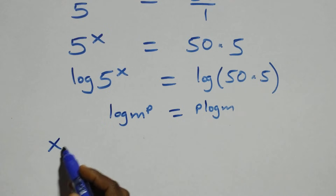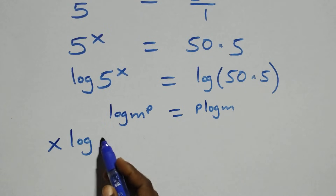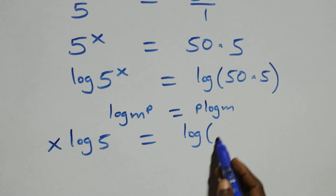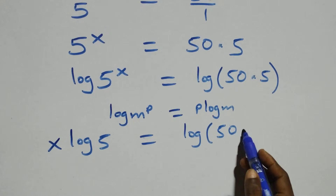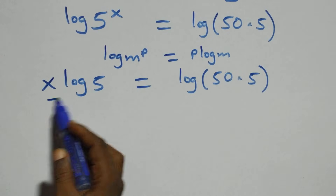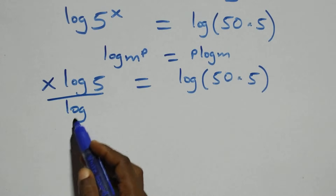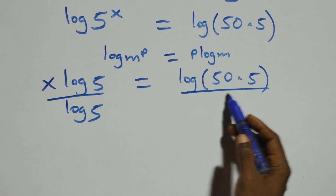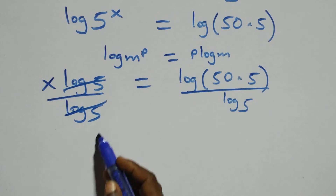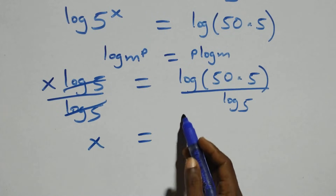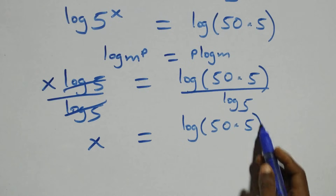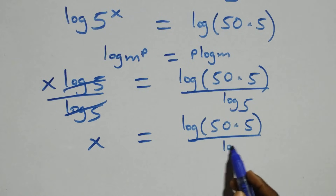This gives us x times log 5 equals log(50 times 5). We then divide both sides by log 5, giving x equals log(50 times 5) over log 5.